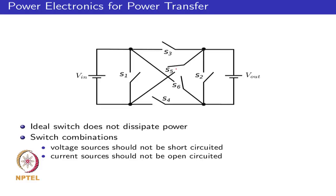In a typical power electronics-based power transfer system, you have two voltage sources V_in and V_out and want to transfer power between them. Using resistors always results in dissipation; using switches in the linear range also causes dissipation. To achieve the best efficiency, power electronics operates components as switches — either fully on or fully off. An ideal on-switch has no voltage drop and therefore no power dissipation; an ideal off-switch carries no current and therefore no dissipation.